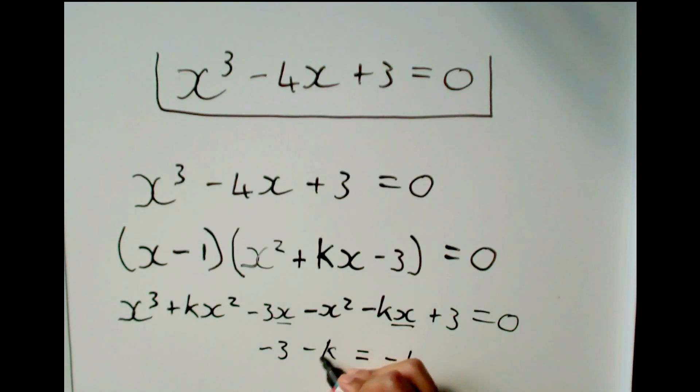And now, if I solve this by taking this 3 across, I end up with minus k is equal to minus 1. So k is equal to 1.